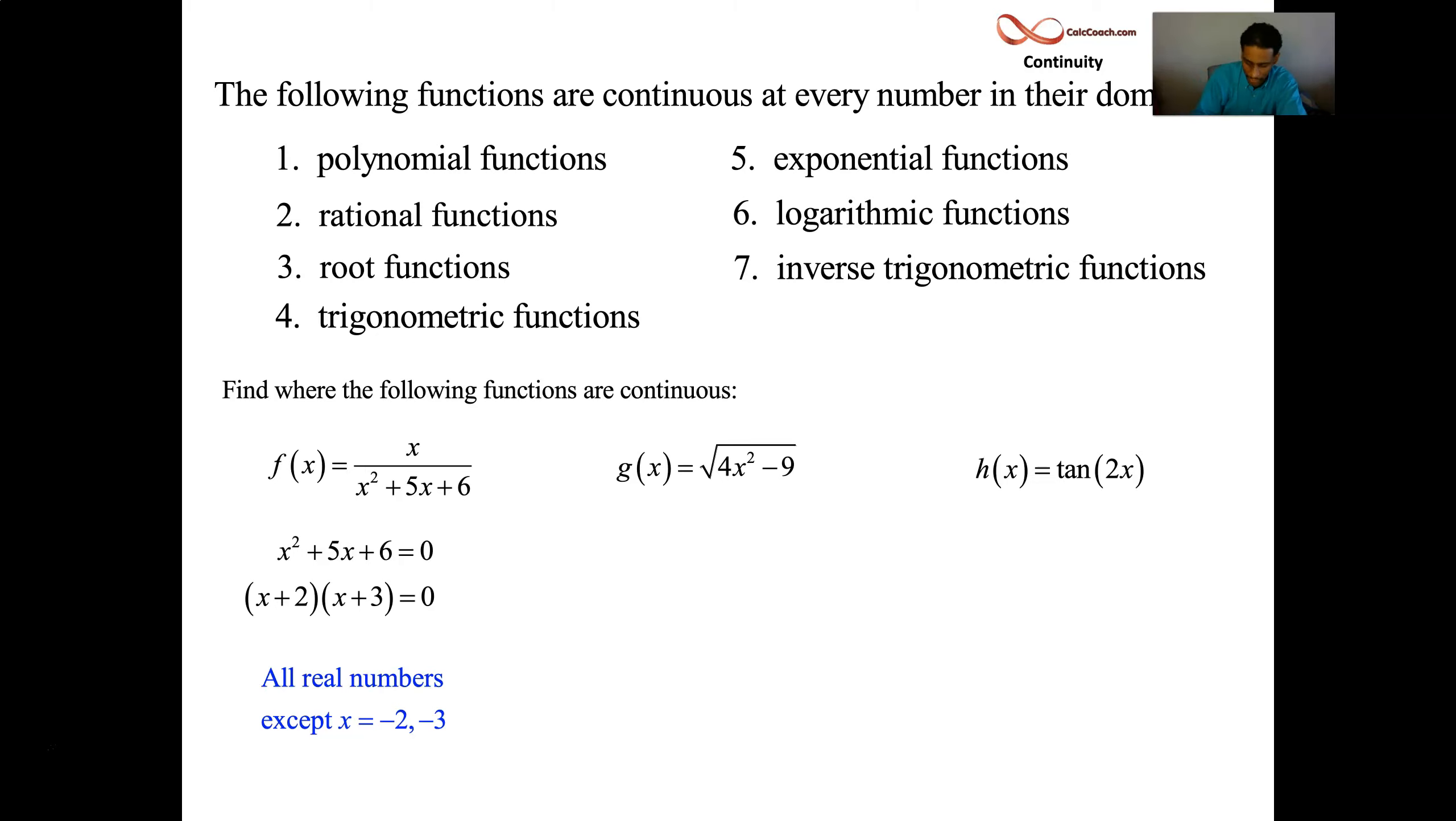Now, how do you report that answer in interval notation? Well, think of a number line, right? And chop the number line up. OK, so take off negative 3 and put an x there. Take off negative 2 and put an x there. Everyplace else, you're defined at, except for those two guys. So then when it's time to write the interval notation version, you go from minus infinity up to negative 3. You go from negative 3 to negative 2. And then you go from negative 2 to infinity.